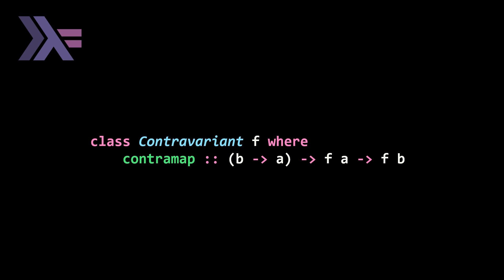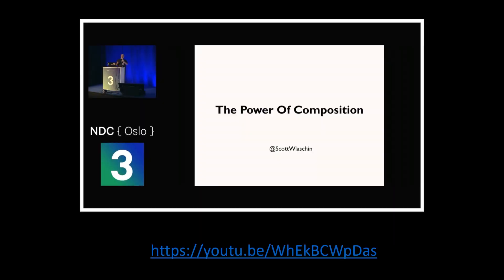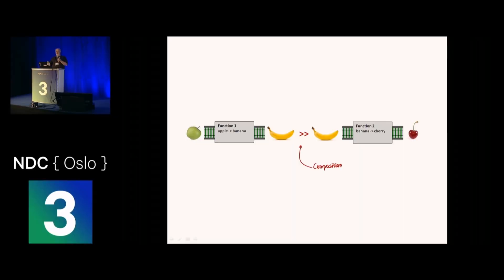So for the type class contravariant, we basically have a contramap, which if you compare this to your functor, you'll note that the a and the b in the type signature of contramap are reversed. And the way to visualize this, like I said, is from a talk. This is a fantastic talk. Scott Wlaschin is a pretty well known individual in the F sharp community, and I think in the functional programming community in general.